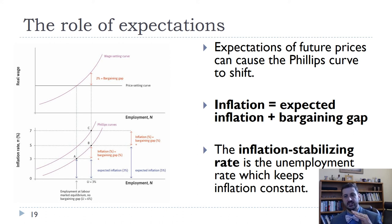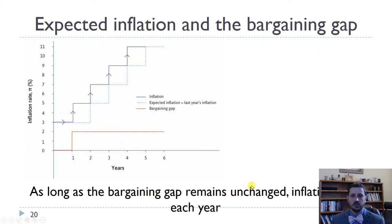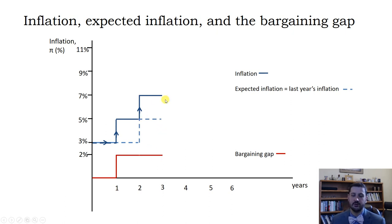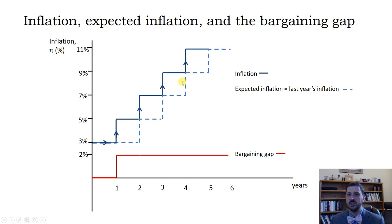That's really why the unemployment-inflation relationship in the Phillips curve fell apart in the 1970s — because expected inflation was increasing. Inflation had been low in the 50s but increased in the 60s, and people started to build expected inflation into their wage demands and pricing decisions. As long as the bargaining gap remains unchanged and we try to be below the stable inflation point, inflation increases each year. For example, a 2% bargaining gap with 3% expected inflation pushes inflation to 5%. Now people expect 5%, and with a 2% bargaining gap, inflation becomes 7% — and it just keeps going.